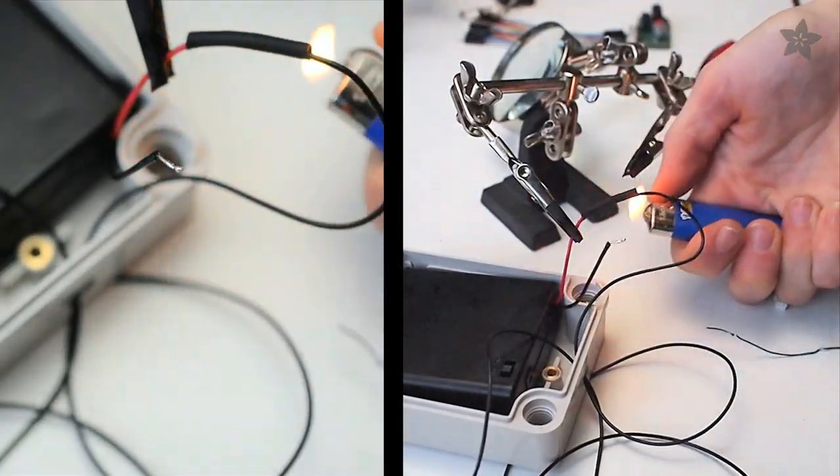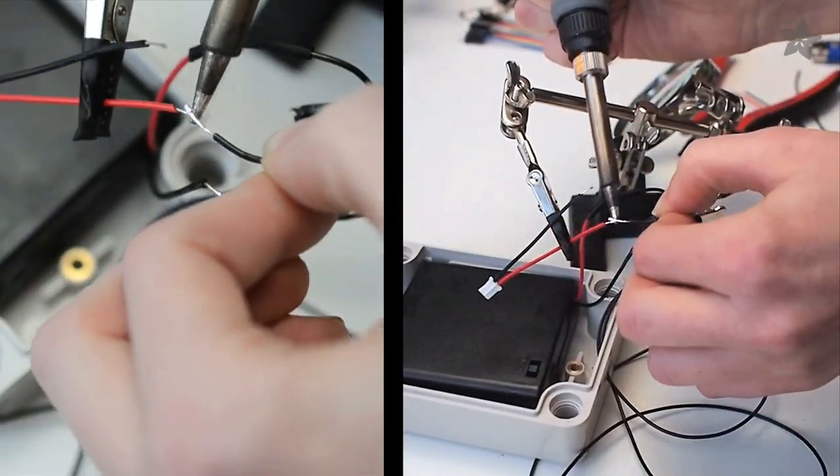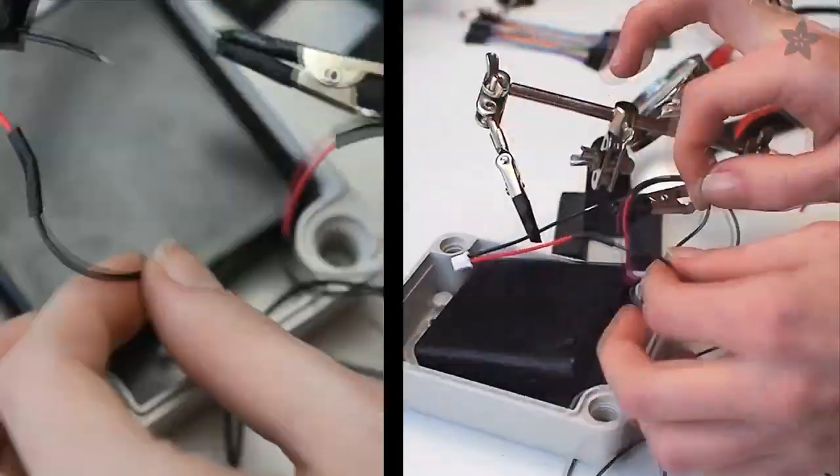Solder one lead of the switch to the red line of your battery pack and the other lead of your switch to the red line of the JSD connector. Then you'll solder the black ground lead from the JSD connector to your battery pack.